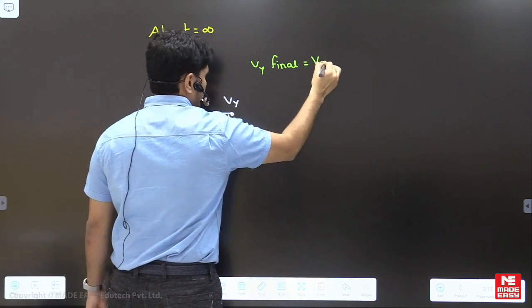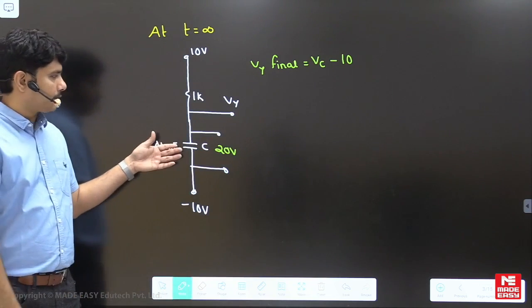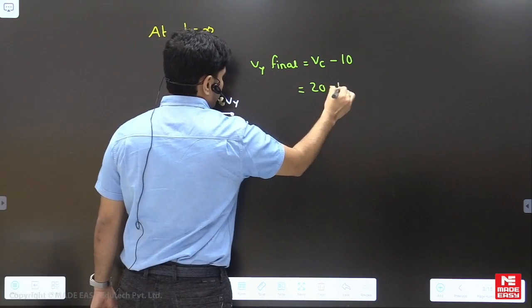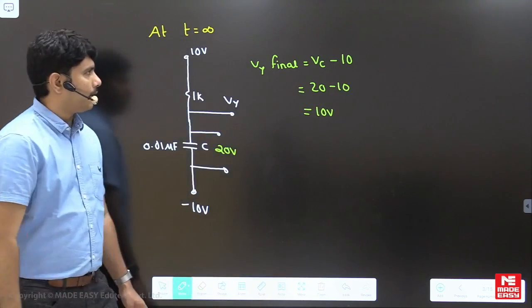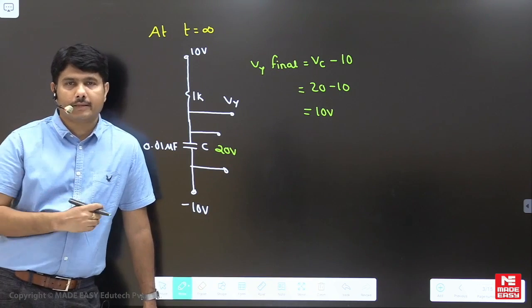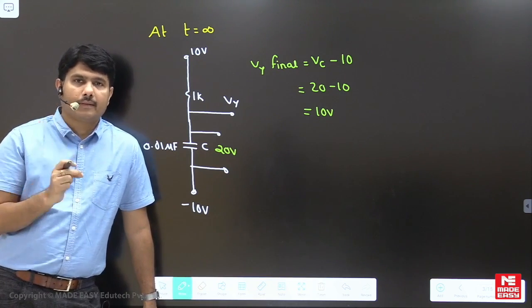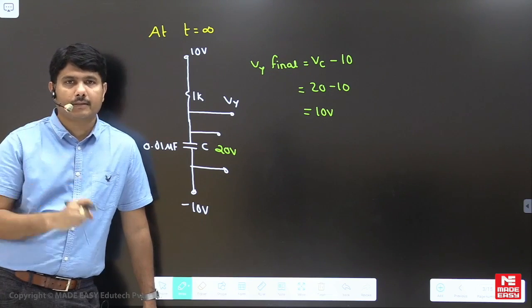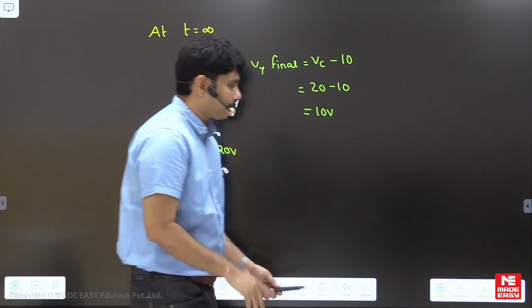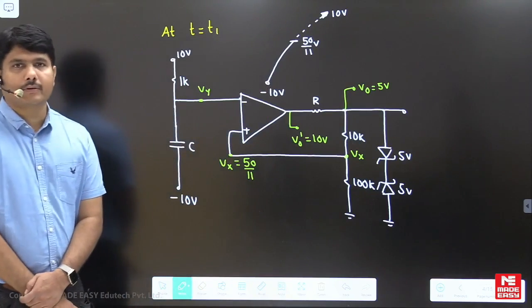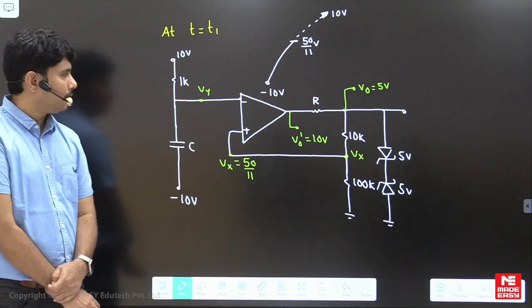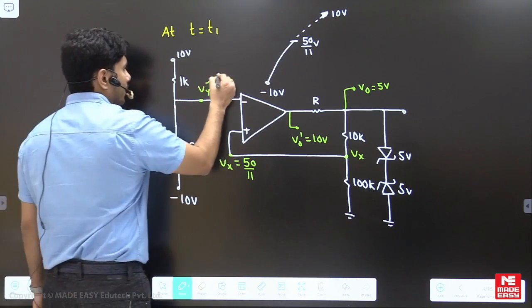So V_y moves from −10V toward +10V as the capacitor charges. The reference V_x = 50/11 ≈ 4.55V sits between these values. When V_y rises and crosses 50/11, the comparator triggers. At that moment V_y > V_x, so V_d becomes negative, and the op-amp output switches to −10V, making V₀ change from +5V to −5V.